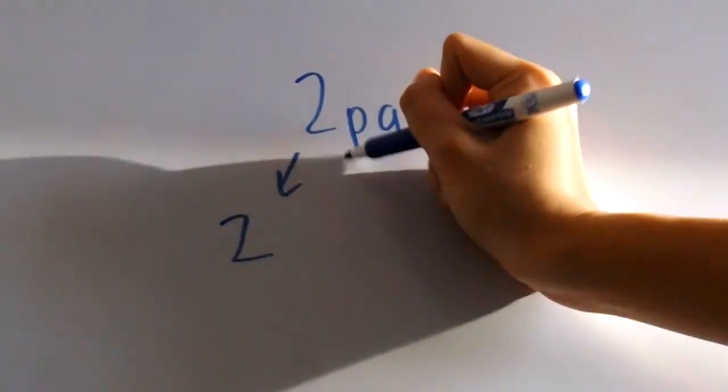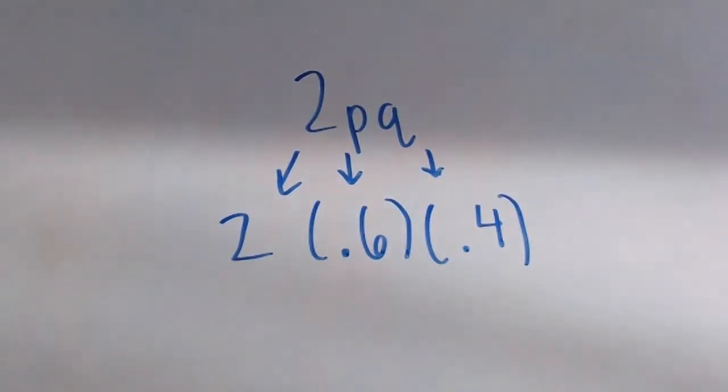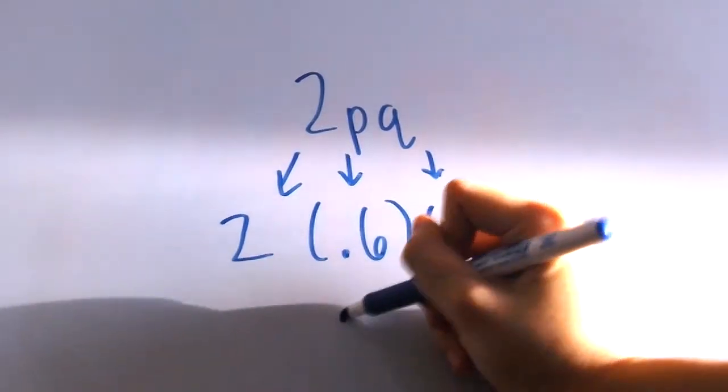See, we're almost done. The last thing to do is to find out 2pq, which is easy since we already know what p and q are. So we just have to plug in p and q into the equation and you get this.